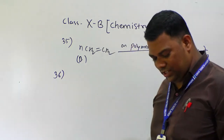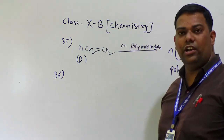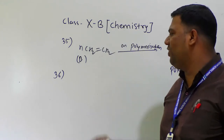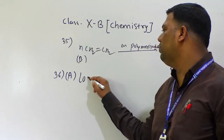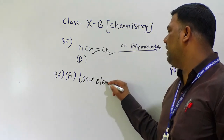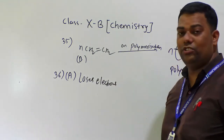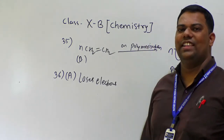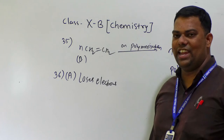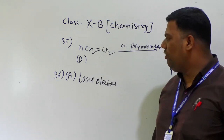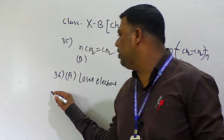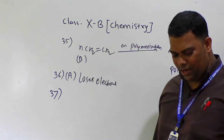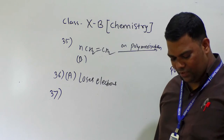Question number 36: generally reducing agents are what? Option A — they lose electrons. Losing electrons means oxidation. So reducing agents undergo oxidation. That is already given in the theory part. The answer is option A — loses electrons.